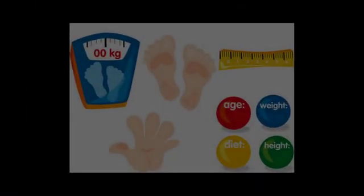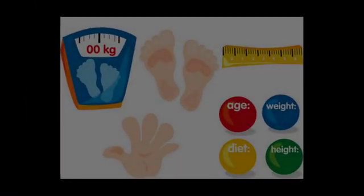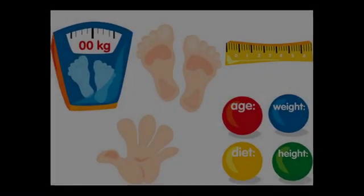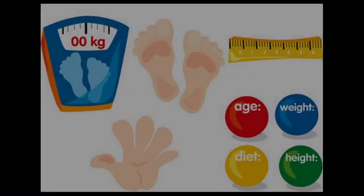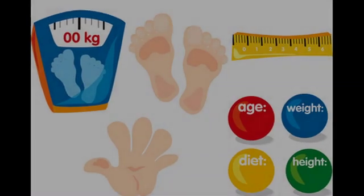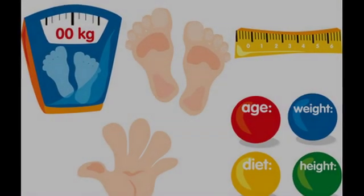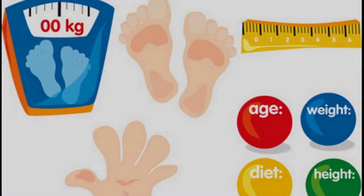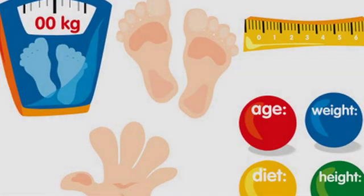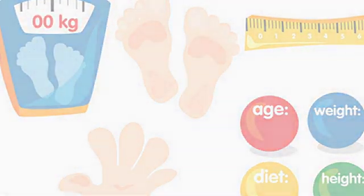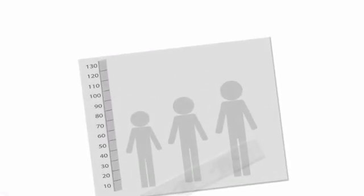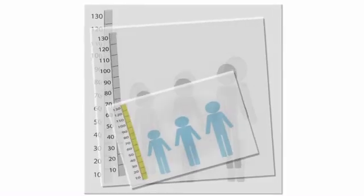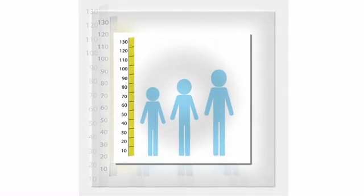In circumstances where children are profoundly short, and that is defined by the American Academy of Pediatrics as well as the Endocrine Society and the Lawson-Wilkins Pediatric Endocrine Society as being at or below the second percentile, and your pediatrician or family care provider can certainly guide you as to whether or not your child is at that level. That child would be considered to be short, regardless of whether or not there's a family history of being that short.